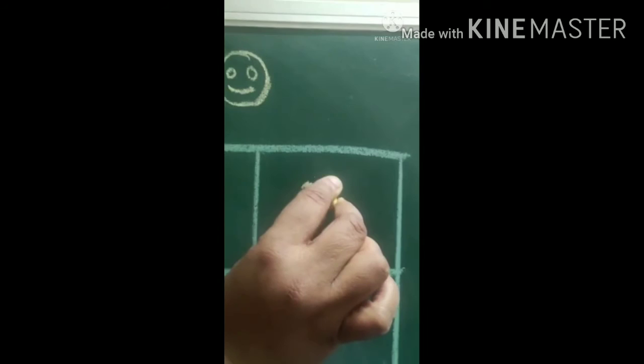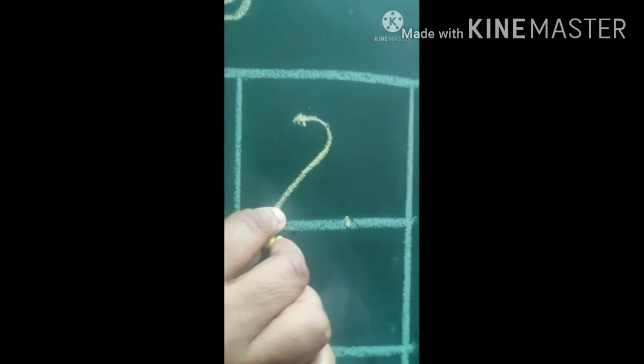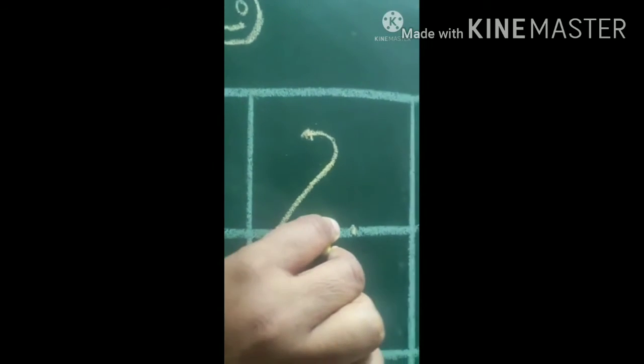First make a small slight curve and then bring it down and then make a sleeping line. This is two.